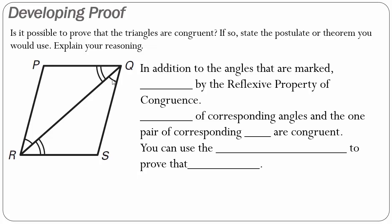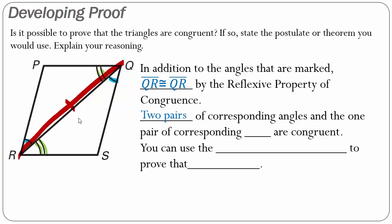In Example B, I notice two sets of congruent angles: angle PRQ is congruent to angle SQR, and angle PQR is congruent to angle SRQ. Line segment QR is shared by triangles PQR and SRQ, so line segment QR is congruent to line segment QR by the Reflexive Property of Congruence. Since I have two pairs of corresponding angles and the shared side between them, I can use the Angle-Side-Angle Congruence Postulate to prove that triangle PQR is congruent to triangle SRQ.